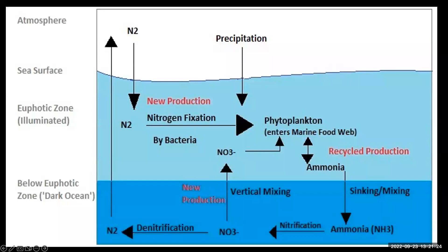This flowchart shows the nitrogen cycle from the atmosphere into the food web and back. The next diagram shows how nitrogen cycles in the ocean. You can see nitrogen gas fixed by bacteria before entering the marine food web. Also note how nitrification and denitrification occur below the euphotic zone, or the sunlit area of the ocean.